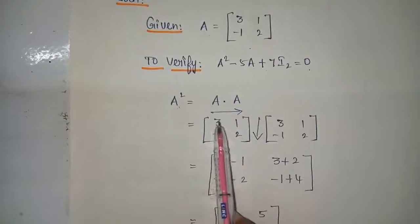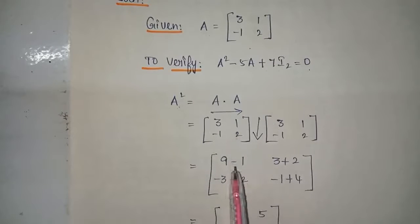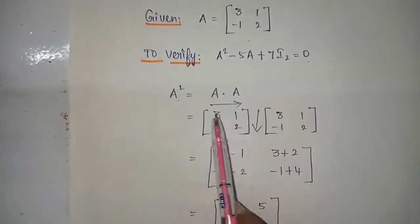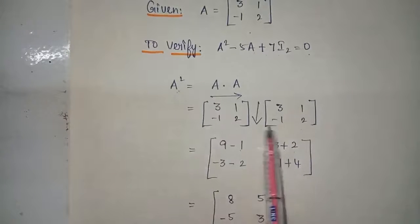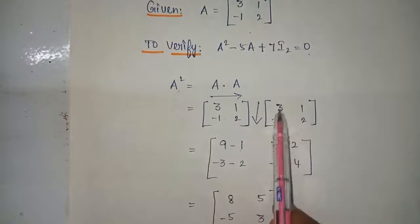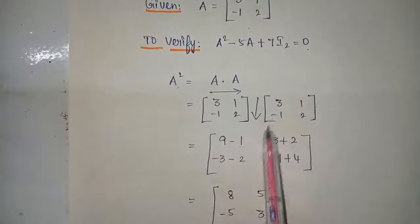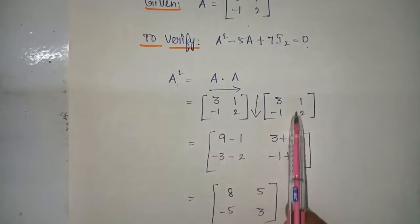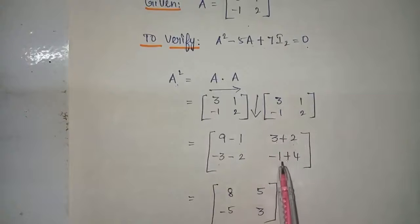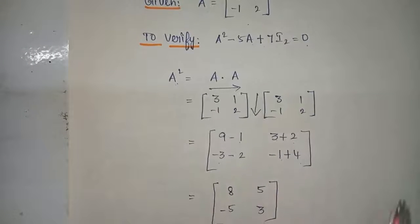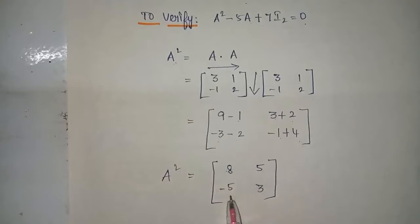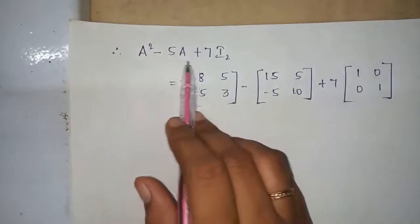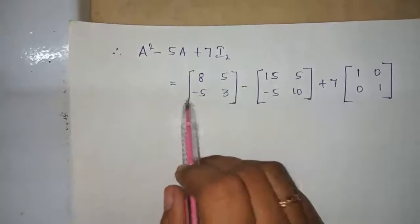Computing A squared: first row first column — 3 times 3 plus 1 times minus 1 equals 9 minus 1 equals 8. First row second column — 3 times 1 plus 1 times 2 equals 5. Second row first column — minus 1 times 3 plus 2 times minus 1 equals minus 5. Second row second column — minus 1 times 1 plus 2 times 2 equals 3. So A squared equals 8 5 minus 5 3.